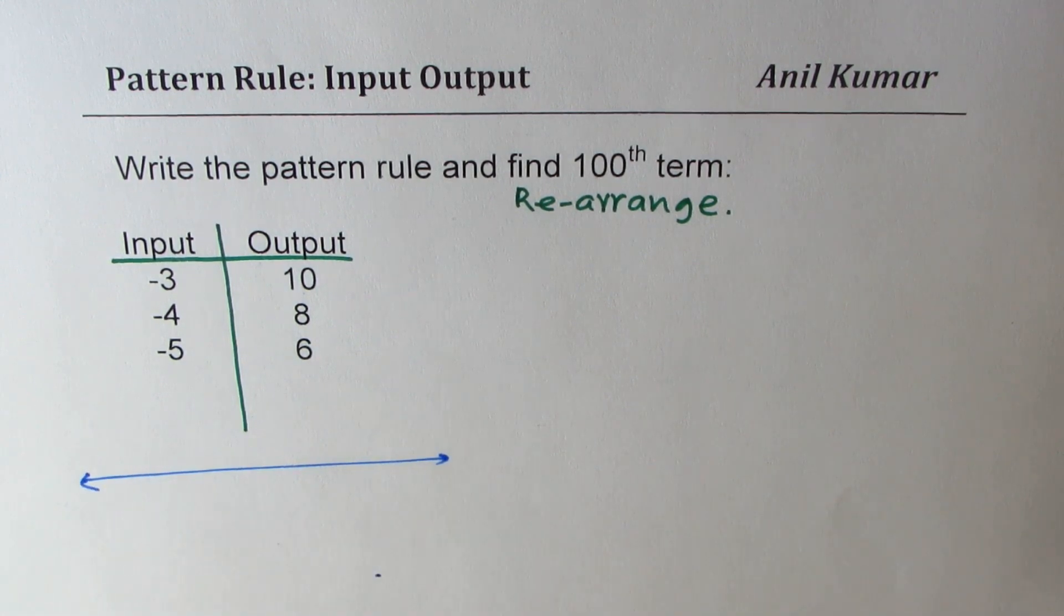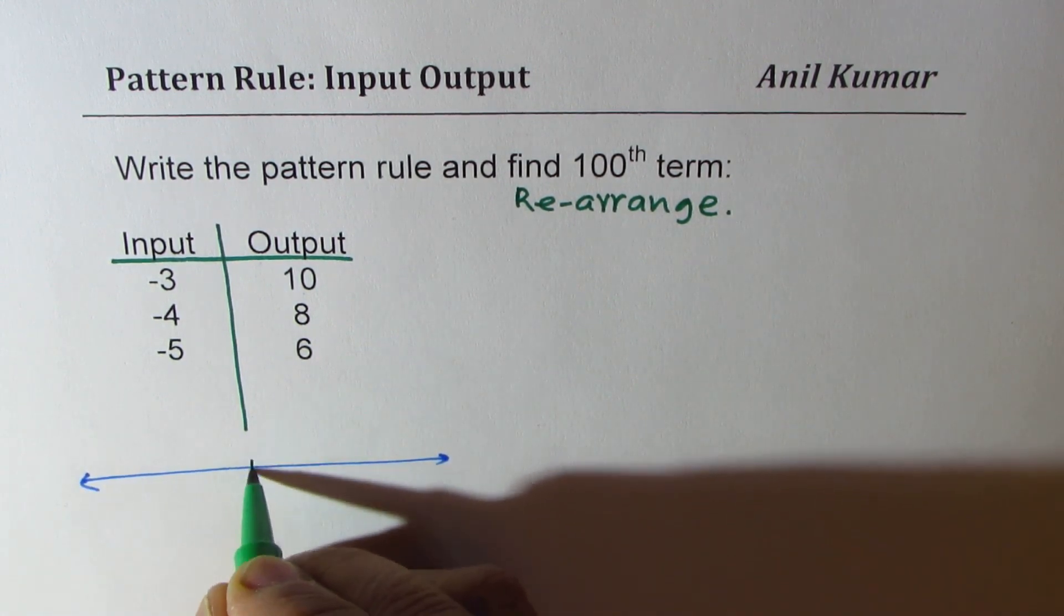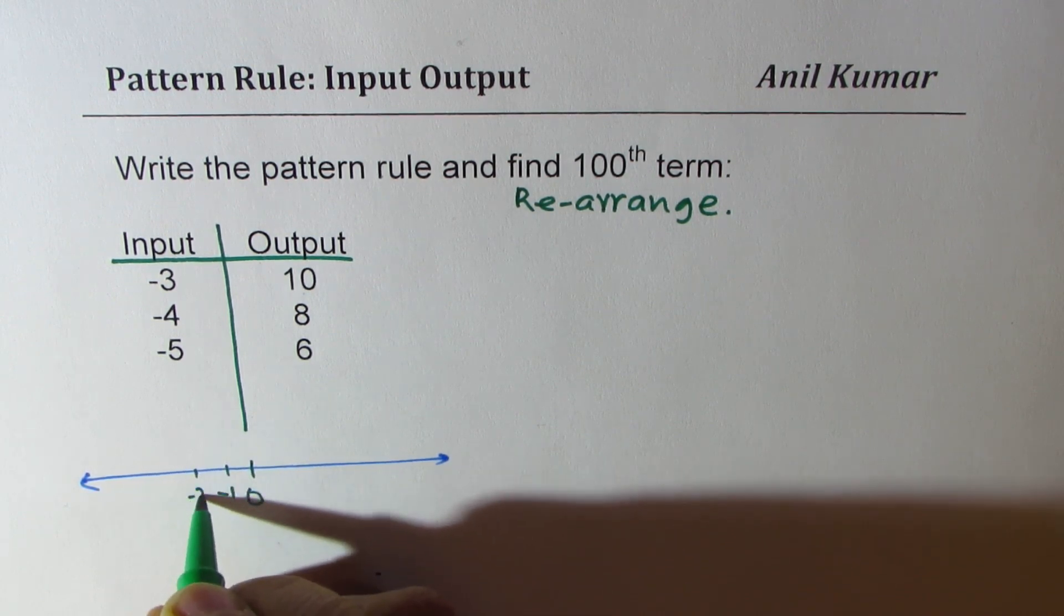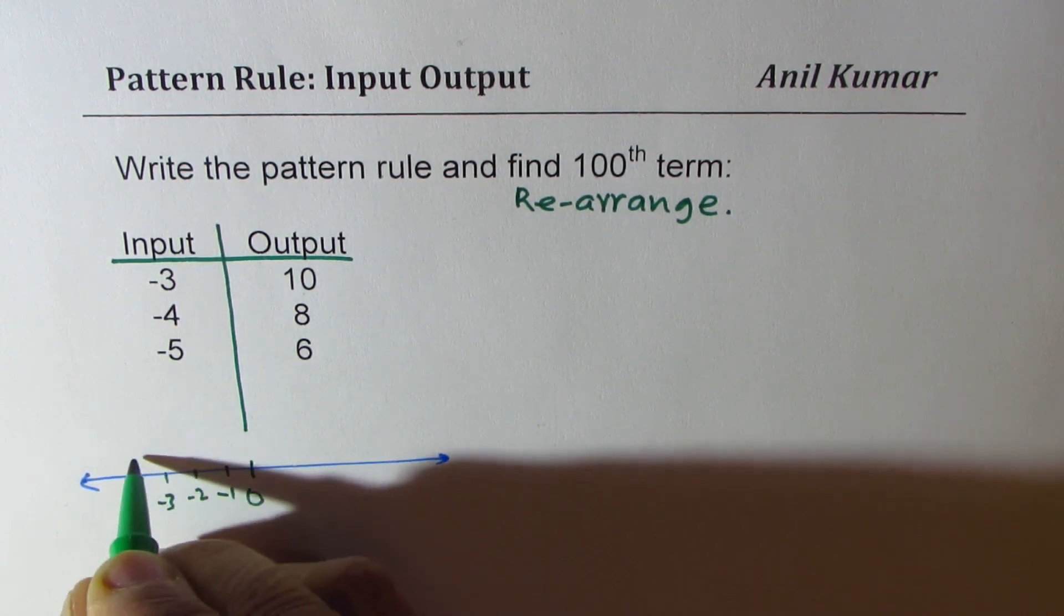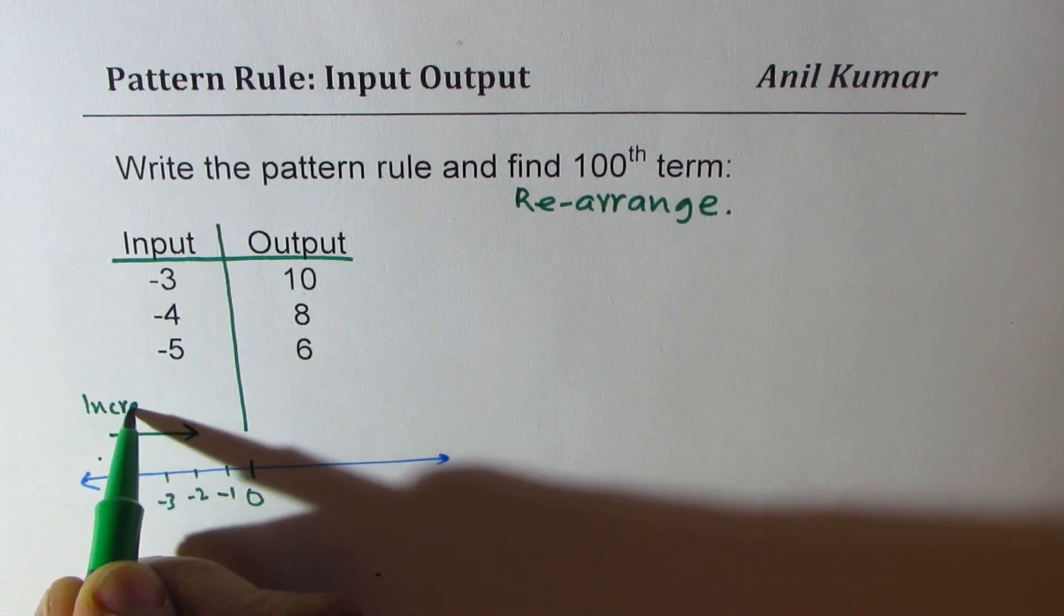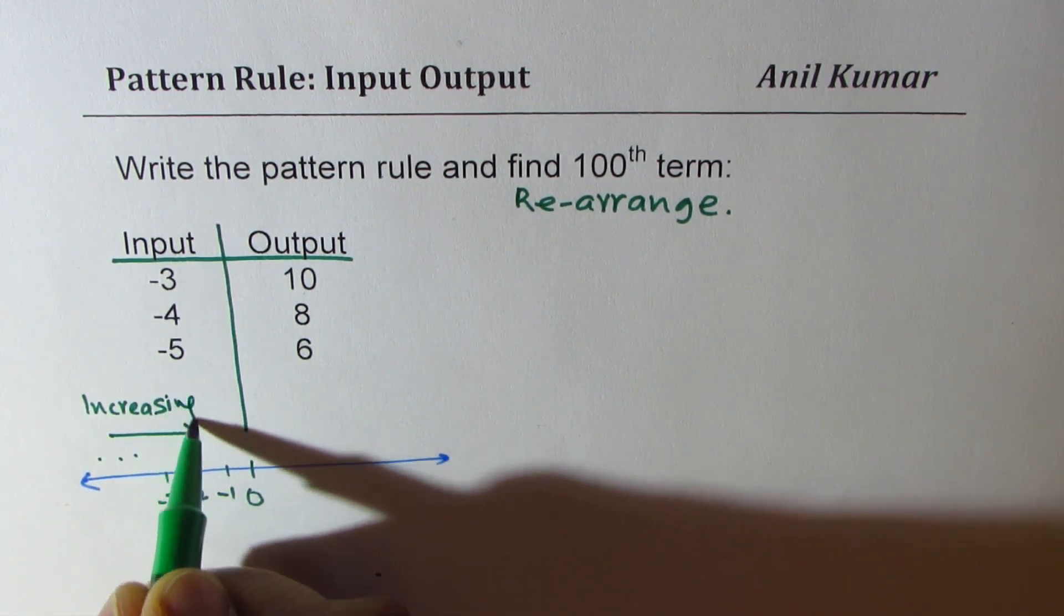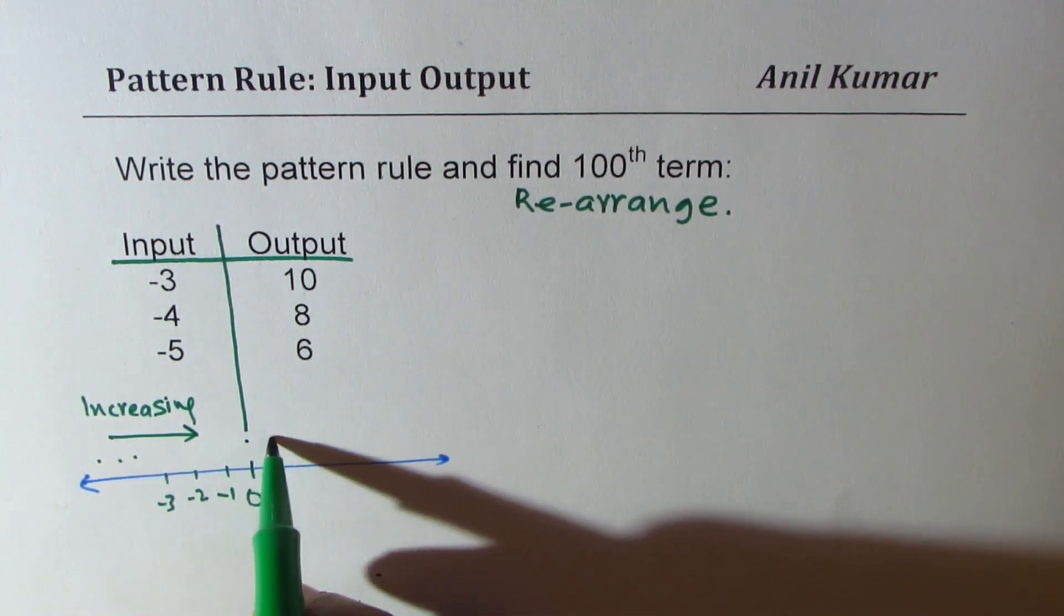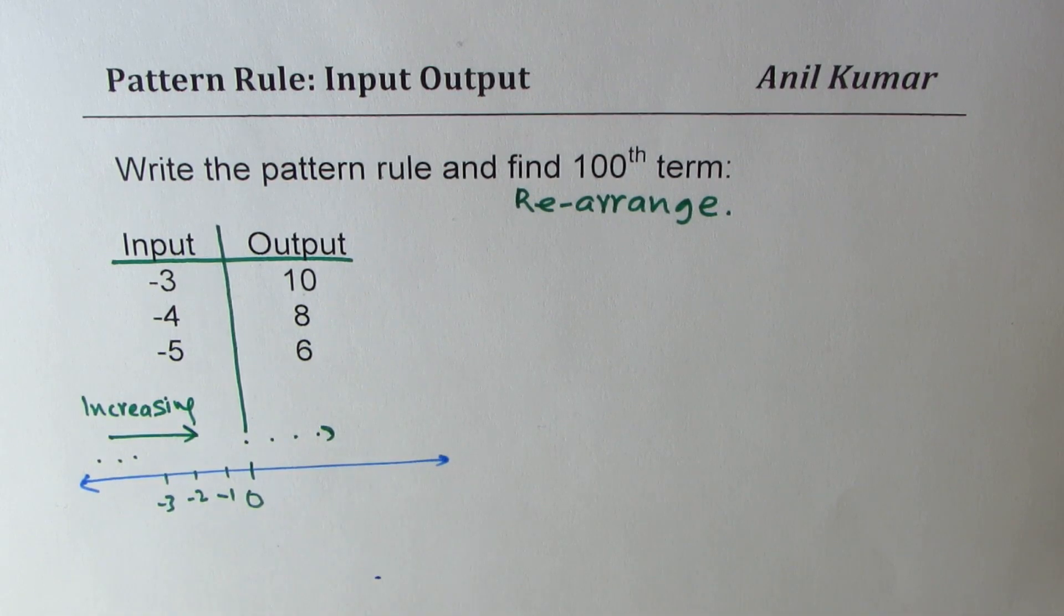So this is our number line. On a number line if we have zero here, then this is minus one, this is minus two, this is minus three and so on. Increasing means this direction is increasing. So we want the hundredth term, so we have to move in this direction and get to the hundredth term.